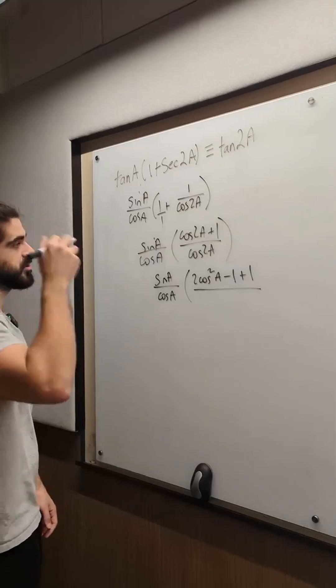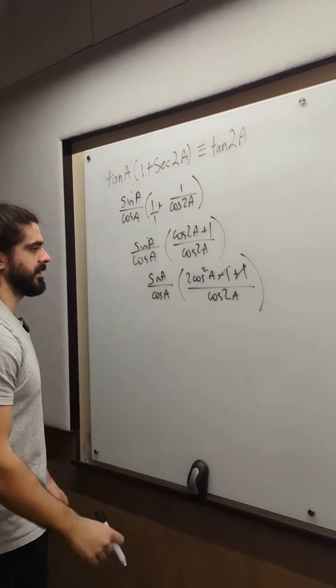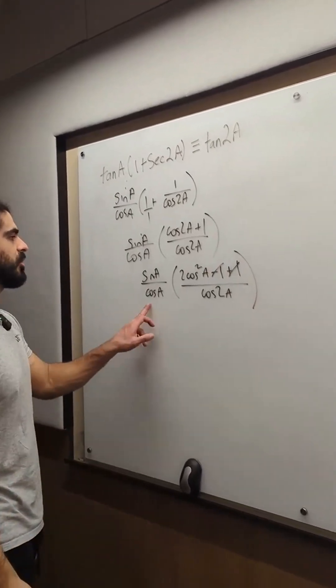So, this one is, I just don't know which one to use just yet. 2cos squared a minus 1. Now, here the cos cancels.